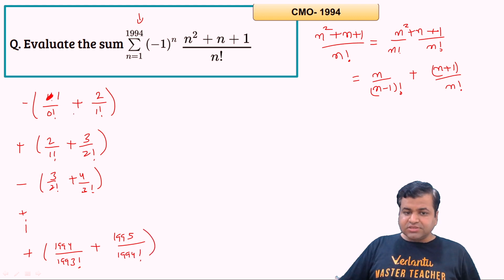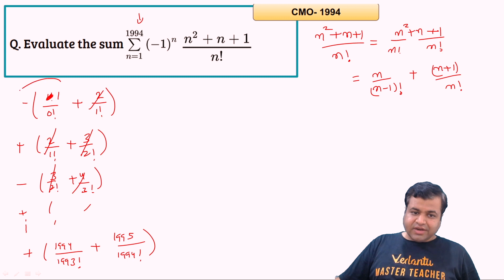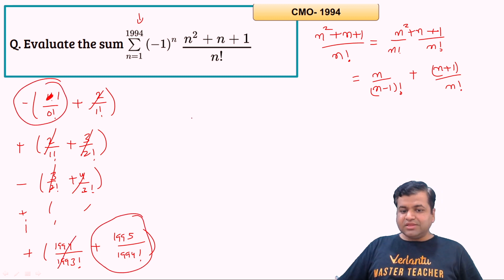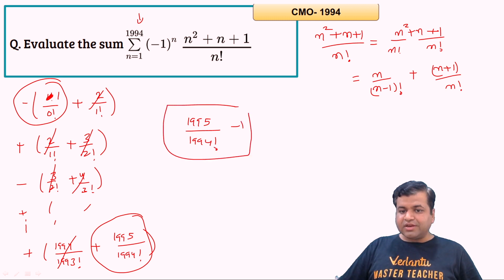When we add all these terms, we can see clearly that consecutive terms cancel out — this term cancels with that one, and so on. We start with one negative term remaining. At the end, the sum equals 1995/1994! − 1.